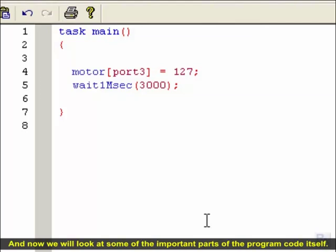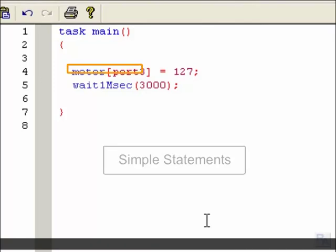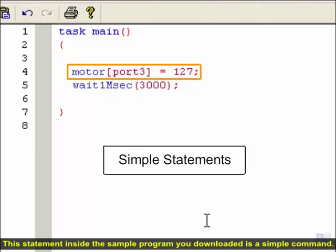And now, we will look at some of the important parts of the program code itself. The most basic kind of statement in Robot C simply gives a command to the robot. This statement inside the sample program you downloaded is a simple command. It instructs the motor plugged into port 3 to turn on at full power.